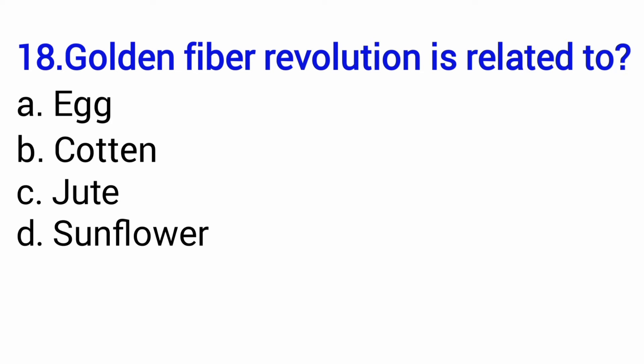Golden fiber revolution is related to — the options are egg, cotton, jute, or sunflower. You need to remember that golden fiber revolution is associated with option number C — jute. Also remember: if it is silver fiber, we discussed this earlier, that would be cotton; and if it is golden fiber, then it is jute. So the option is C — jute.